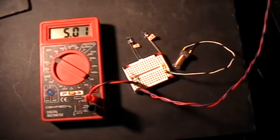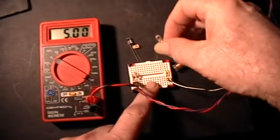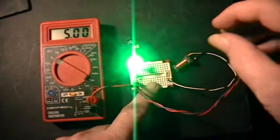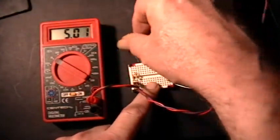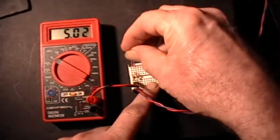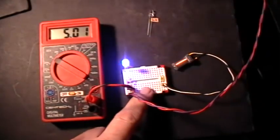There's about 5 volts now on the power supply and we'll just test these LEDs to make sure that they work. Here's the green one, nice green super bright, and here's the blue one, nice blue super bright.